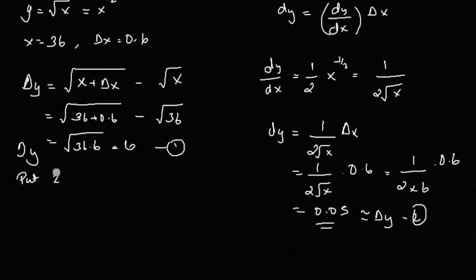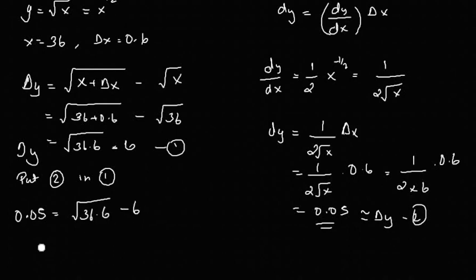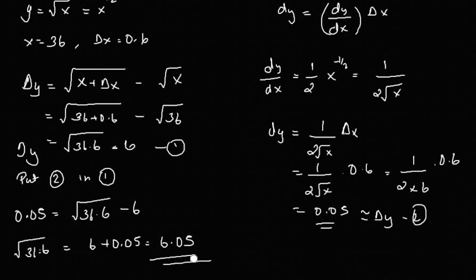Substituting back into equation 1: 0.05 equals root 36.6 minus 6, so root 36.6 equals 6 plus 0.05, which equals 6.05. So the answer is root 36.6 is approximately equal to 6.05. This is the approximation method.